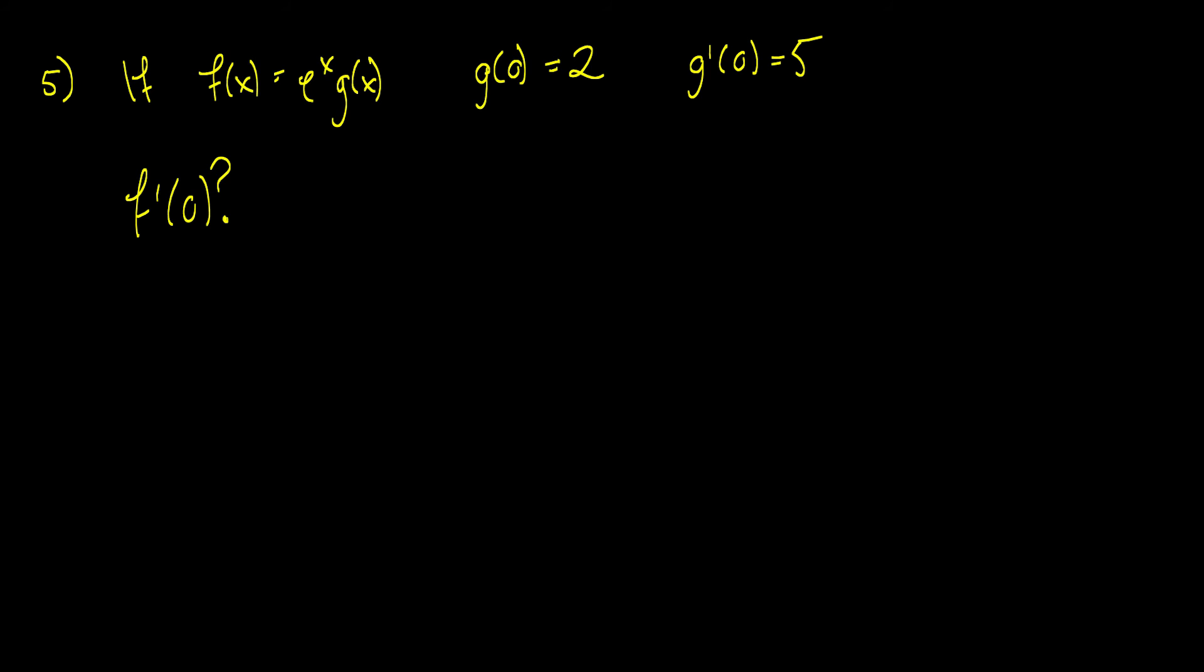Okay, so here's what we're going to do. First, we're going to find f prime of x. So f prime of x is equal to, well, we're going to have to use the product rule here. So it's the derivative of e to the x, which is e to the x times g of x plus e to the x times the derivative of g to the x, which is g prime of x. So this is our derivative function.